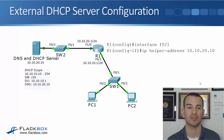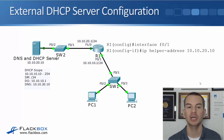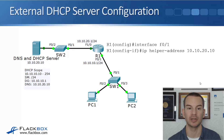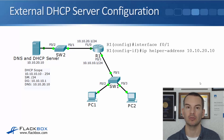I've configured a scope on my DHCP server for the 10.10.10 subnet, giving IP addresses starting at .10 going up to .254, a subnet mask of /24, default gateway 10.10.10.1, and a DNS server is also on the DHCP server.